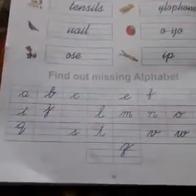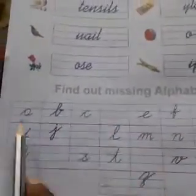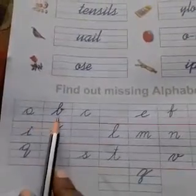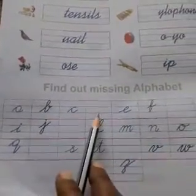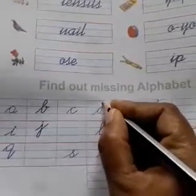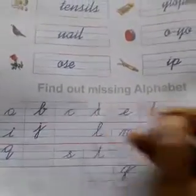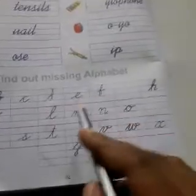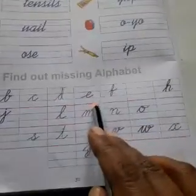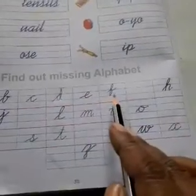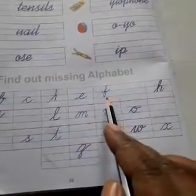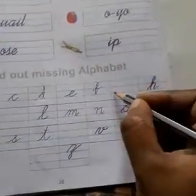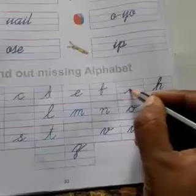I will give you one example. A, after A is B. After B is C. After C is D. So this time write: D, after D is E. After E is F. After F, which letter? G. This type — complete this pattern.